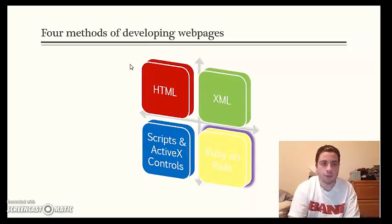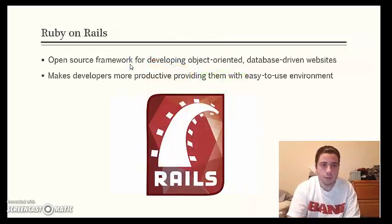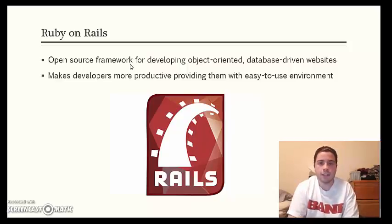And last we're going to talk about Ruby on Rails. Ruby on Rails is an open source framework for developing object oriented database driven websites. Ruby on Rails makes developers more productive providing them with an easy to use environment and cutting down on time spent in development. Thank you.